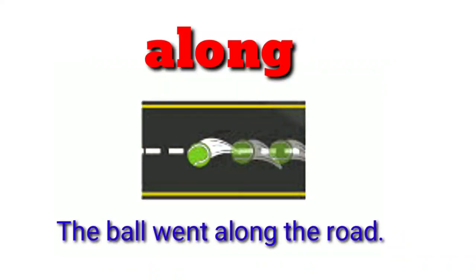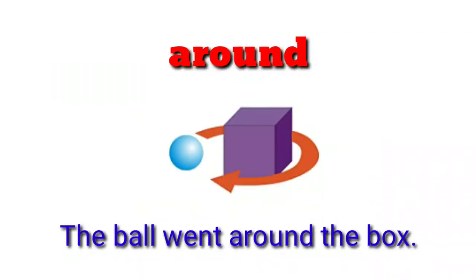Along. The ball went along the road. 'Along' means moving in the same direction as something — not crossing it. Around. The ball went around the box. 'Around' means moving in a circular path surrounding something.